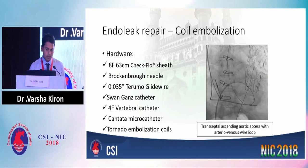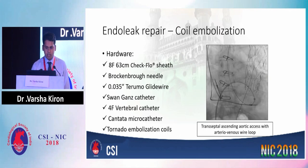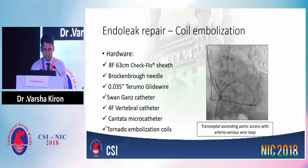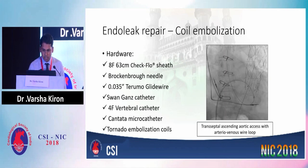We had to re-strategize. We considered doing a coil embolization through a right radial approach from the subclavian, but because of subclavian tortuosity, that was not felt to be a viable option. So we did something that had been done at our center twice before. We went on to do a transeptal puncture using a Brockenbrough needle through an RFA access. A Checkflo sheath was passed into the LA, over which a Swan-Ganz catheter was taken into the ascending aorta. A Terumo glide wire was passed through it, and the soft end was snared out from the right femoral artery, thereby obtaining a veno-arterial wire loop. Over this wire loop, we advanced the Checkflo sheath into the ascending aorta.